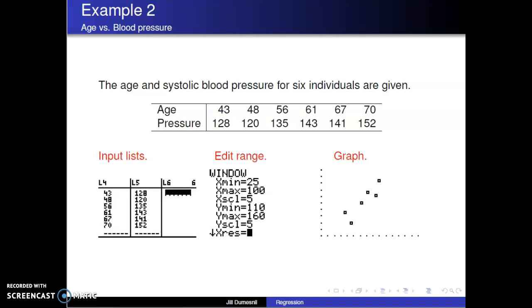I put the given values in LIST4 and LIST5 respectively. I readjust the window to cover the current values and hit GRAPH. This time, the scatter plot displayed shows the data clustering in a linear pattern.